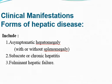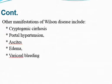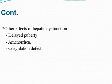Clinical manifestations for the liver include asymptomatic hepatomegaly with or without splenomegaly, subacute or chronic hepatitis, or fulminant hepatic failure. It may also present as portal hypertension, cirrhosis, ascites, edema, and variceal bleeding. Other effects on hepatic function include delayed puberty, amenorrhea, and coagulation defects.